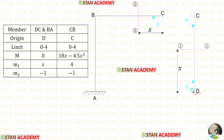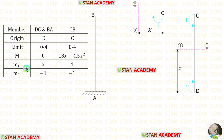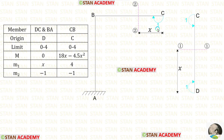Now let us apply a unit moment at the second coordinate in the clockwise direction and find moment M2. At point C, a unit moment develops in the anti-clockwise direction. For DC, the unit moment acts in the clockwise direction, so M2 in DC is negative (equals -1). For CB, the unit moment also acts in the clockwise direction, so M2 in CB is negative (equals -1).